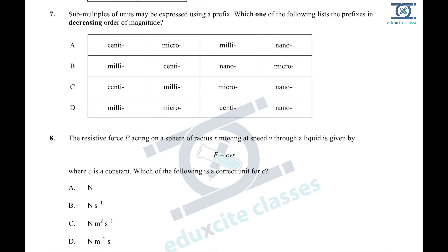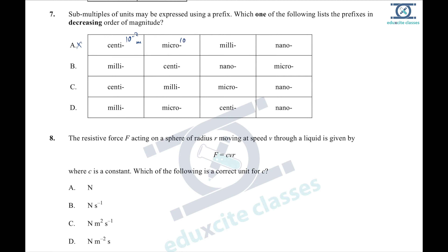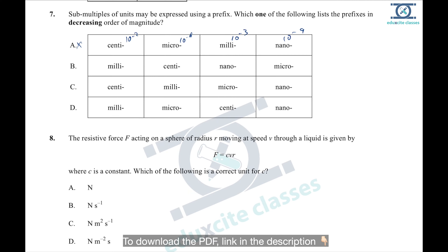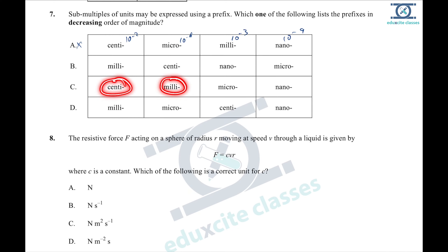Question 7: sub-multiples of units represented using a prefix. Which list orders the prefixes in decreasing order? Centi is 10⁻², milli is 10⁻³, micro is 10⁻⁶, and nano is 10⁻⁹. The correct decreasing order is centi, milli, micro, then nano. Option C is the right answer.